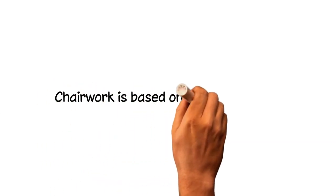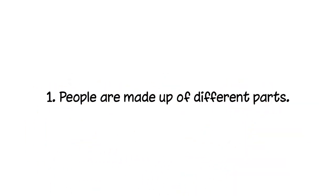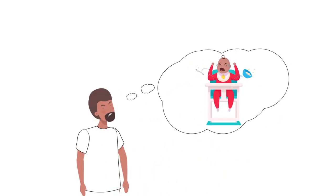Chairwork is based on a few key ideas. Number one, people are made up of different parts. Part of Ken likes the idea of becoming a parent and another part sees the downsides to it.